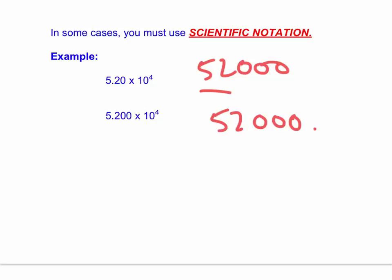But what if I wanted to express fifty-two thousand with three significant figures? You might say, well, gosh, write five hundred and twenty with a decimal point. That would be three significant figures, but it's the wrong magnitude. It's only five hundred and twenty.